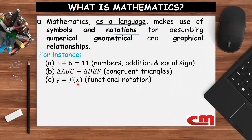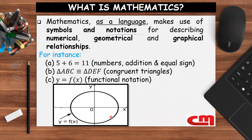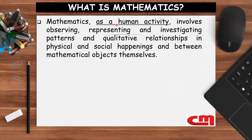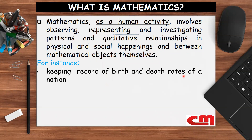y = f(x) is functional notation representing a graphical relationship between y and x, where y is a function of x. Mathematics as a human activity also involves observing, representing, and investigating patterns and qualitative relationships — for instance, keeping records of birth and death rates of a nation tells us whether the population is increasing or decreasing.